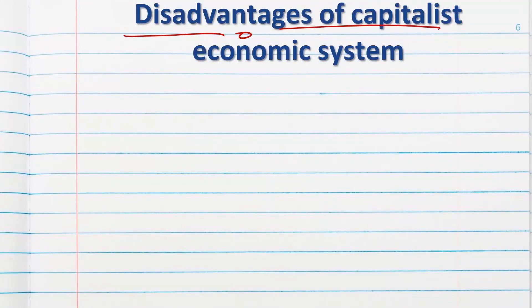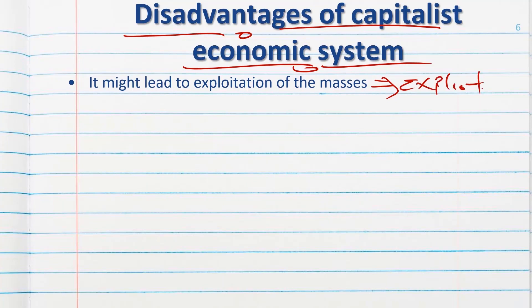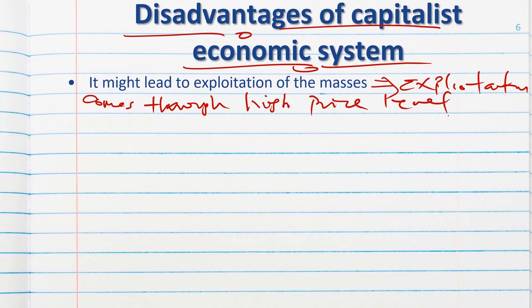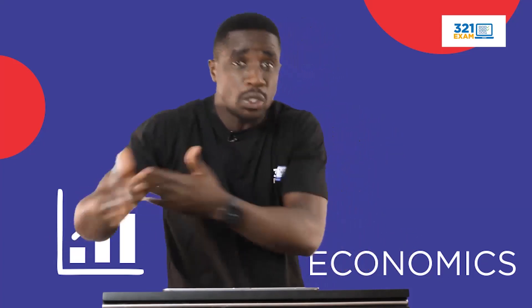Now the disadvantages of the capitalist economic system. Number one, it leads to exploitation of the masses through increasing prices of goods and services — exploitation comes through high price levels. In the capitalist economic system, there is every tendency that the masses might be exploited because private individuals will increase the prices of their products, which gives rise to private monopoly.